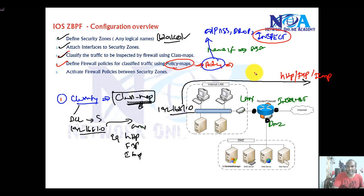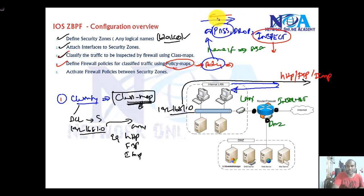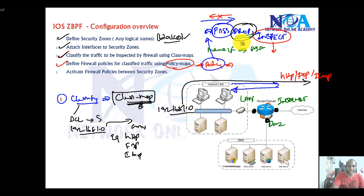Generally we use the inspect option. Inspect ensures that your traffic is allowed, and at the same time return traffic is also allowed automatically by default. If you simply say pass, it just allows traffic but does not keep track of the session. You can also drop specific traffic. By default, any traffic not matching the particular policy map will be automatically dropped, so we don't need to explicitly specify drop.